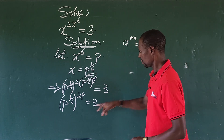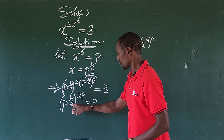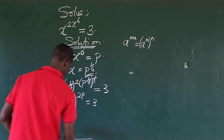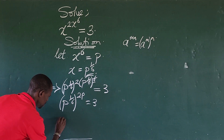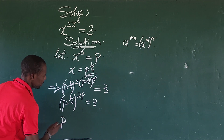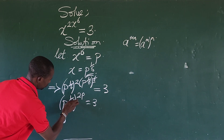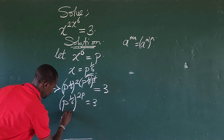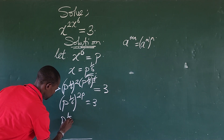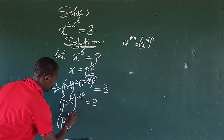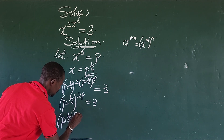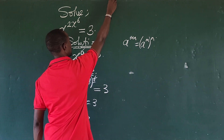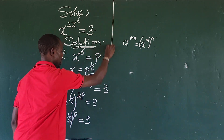Using this index law again, we can simplify further. This will leave us with one over three, so we have: one over three, raised to the power of p, equals three. Let's continue.